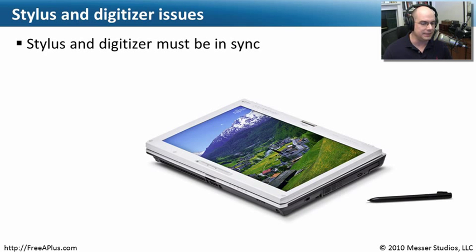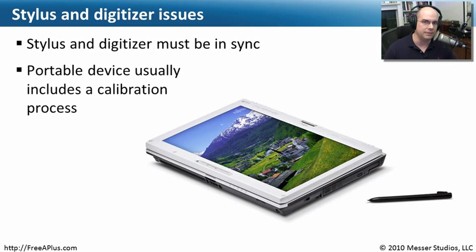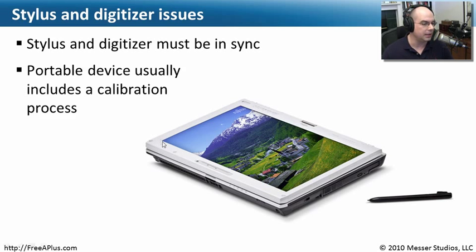One important thing is that the stylus and the digitizer have to be in sync with each other. They have to know that if you click the middle of the screen with your stylus, it really is clicking the middle of the screen. If it's not quite right, there's software on these tablet devices that allows you to calibrate this — you click the top corner and the bottom right corner, and it figures out exactly where the screen is in relation to where you're clicking, so everything is back in synchronization.